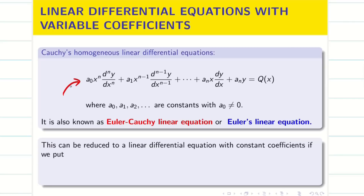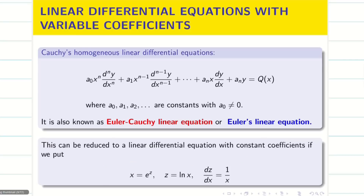This equation can be reduced to a linear differential equation with constant coefficients. Now it has variable coefficients, but we can reduce to constant coefficients by assuming x = e^z, so z = log x, and therefore dz/dx = 1/x. If we apply these three conditions we can reduce it to a linear differential equation with constant coefficients.